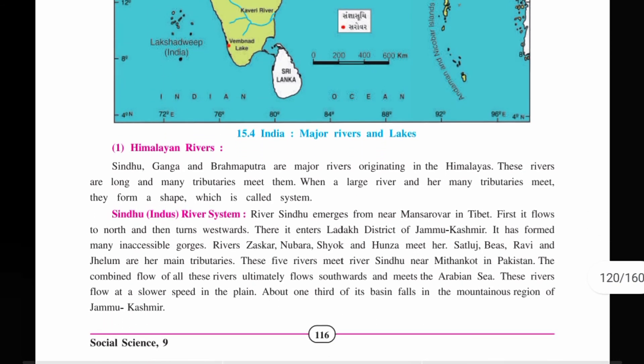Looking at the Himalayan rivers, we see three major rivers: Sindhu, Ganga, and Brahmaputra, which all originate in the Himalayan system. These rivers are long, and along with their many tributaries, they form large river systems. When a large river and many tributaries form a shape together, it is called a river system.